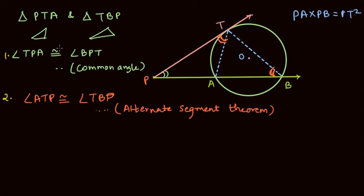Now if two corresponding angles of two triangles are congruent, then the triangles are similar. So can I write triangle PTA is similar to triangle PBT.